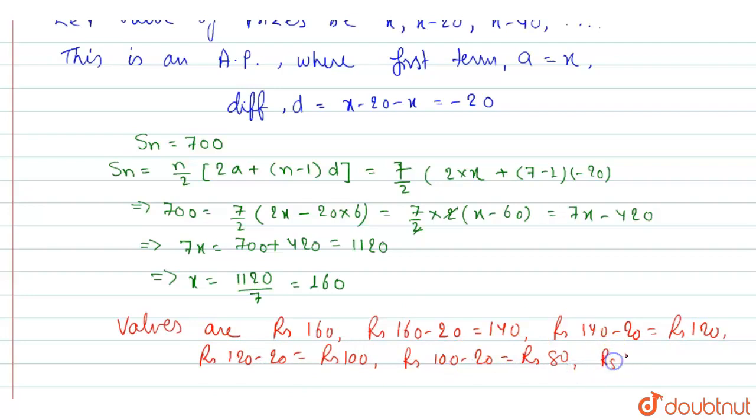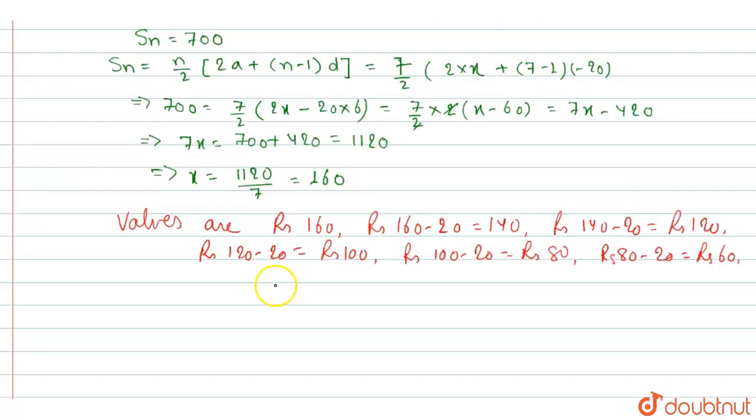Rupees 80 minus 20 is equal to rupees 60 and last one will be rupees 60 minus rupees 20 that will be equal to 40.